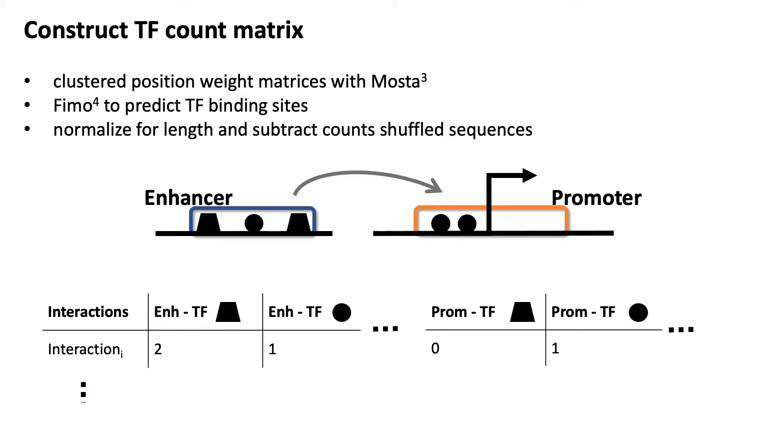To use topic modeling, we first need to construct a count matrix for the transcription factors. We first cluster similar motifs with MOSTA, then use FEMU to predict the transcription factor binding sites. We normalize the counts for length and also subtract the counts on shuffled sequences.